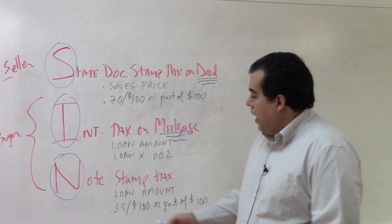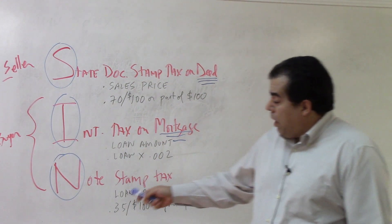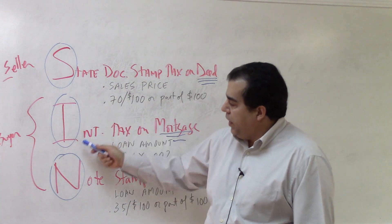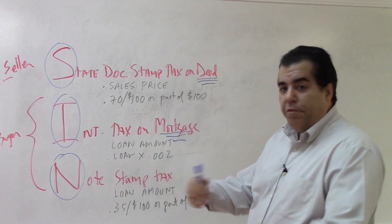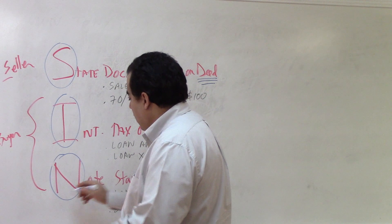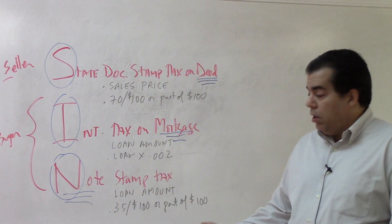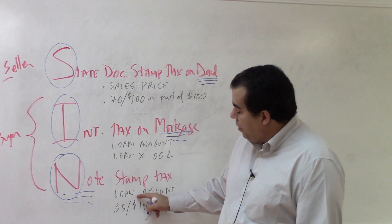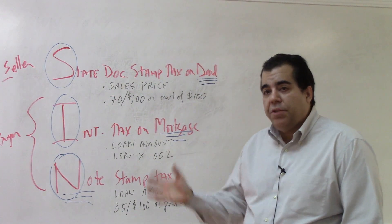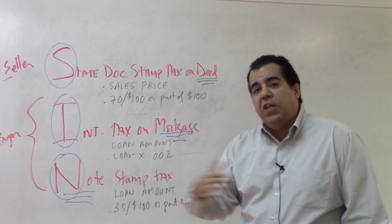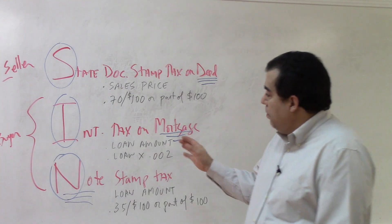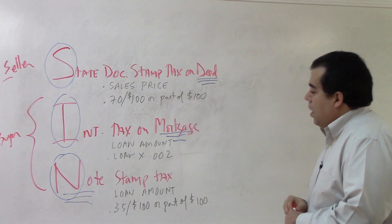Then you have the note stamp tax on the promissory note — I call it 'note' because 'taxes are a sin' works better as a memory aid than 'taxes are a sip.' The promissory note is the document where you personally obligate yourself to pay the debt, so you use the loan amount to calculate the tax on the note. The deed transfers the entire property, so you use the sales price; the mortgage and the note are both loan documents, so you use the loan amount for both.